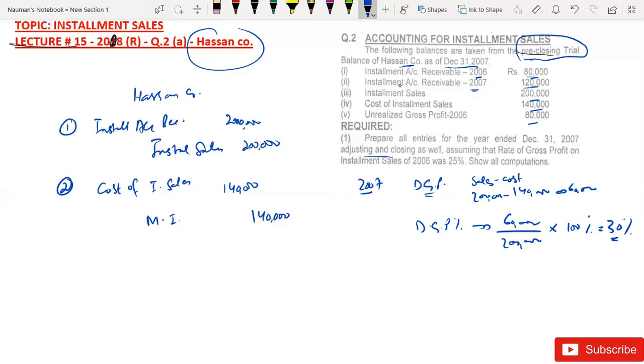Now cash collection is not given in this question. But I know that if I want to calculate cash collection for 2007, then it is not a problem. The sale was 2,000,000.